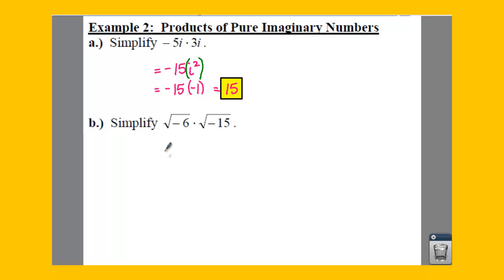Now for B, what we need to do is take the negative out and make it an i in front of each of these. So then what we can do from here is multiply anything that's on the outside, which would be your i and your i, and you can multiply those and get i squared.